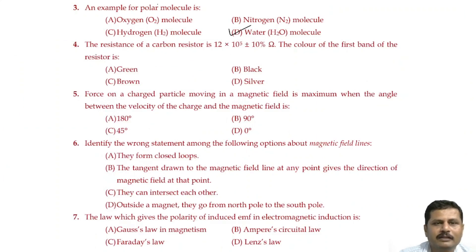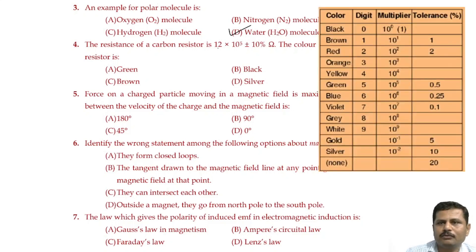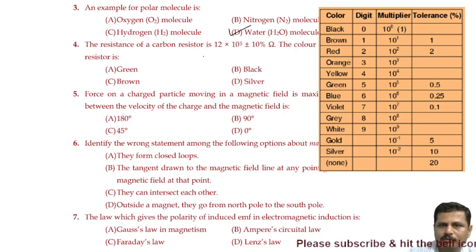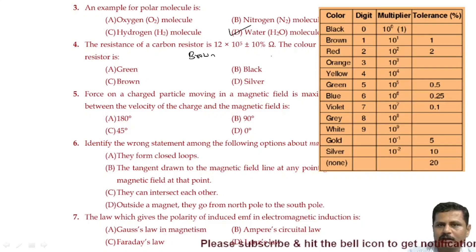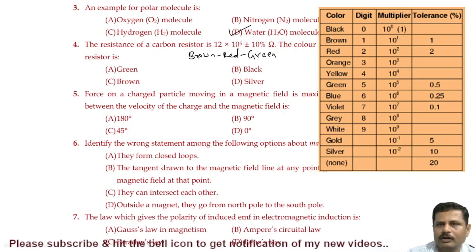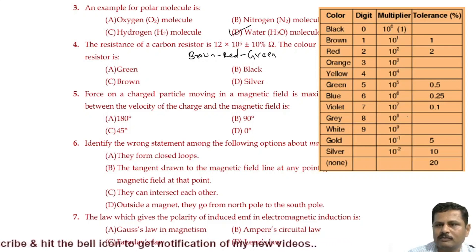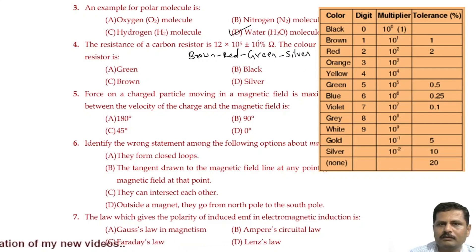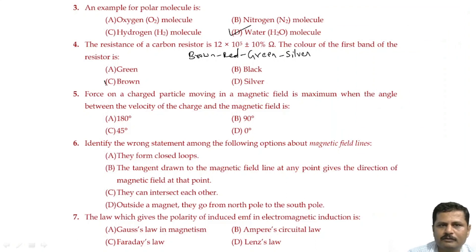The resistance of a carbon resistor is 12 × 10⁵ ± 10% ohm. We need to find the color of the first band. The first and second digits represent colors, the power represents the multiplier, and ±10% shows tolerance. Here 1 represents brown, 2 represents red, and 5 represents green — so the third band is green. The fourth band for 10% tolerance is silver. They are asking the color of the first band, which is brown. Option C is the right answer.